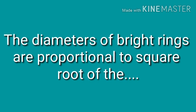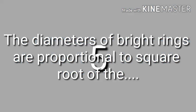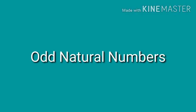The fourth question of this assignment is very well known: the diameters of bright rings are proportional to the square root of — the answer is odd natural numbers.